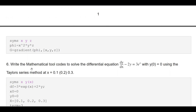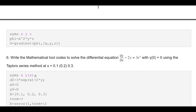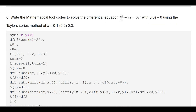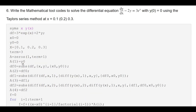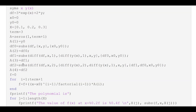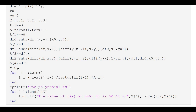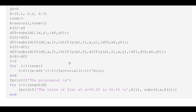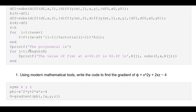Next, write the mathematical tool code to solve a differential equation with initial conditions using the Taylor series method at x = 0.1, 0.2, 0.3. Set the initial values, then differentiate to find y', y'', y''', y'''' (up to y4). Substitute into the Taylor series expression to get the polynomial and the values of y(0.1), y(0.2), y(0.3).